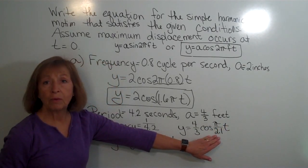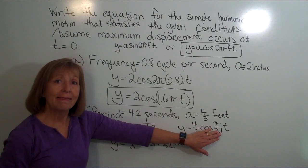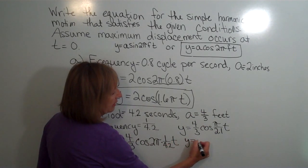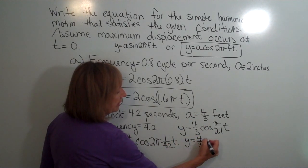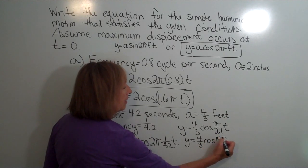And certainly if you wanted to change 2.1 into a fraction of 21 tenths and then flip and multiply, you could also write this as y equals 4.3 times the cosine of 10π over 21 and then t.